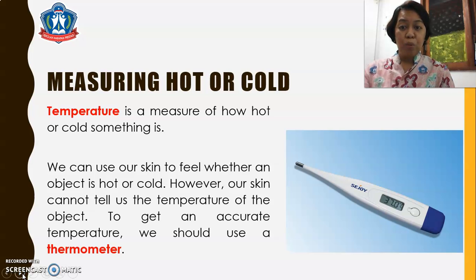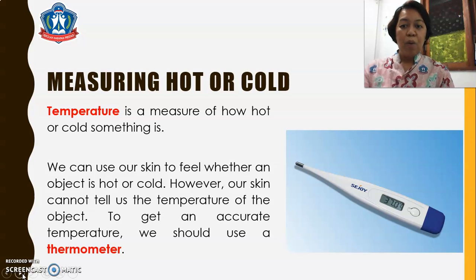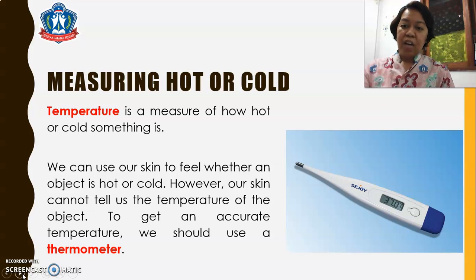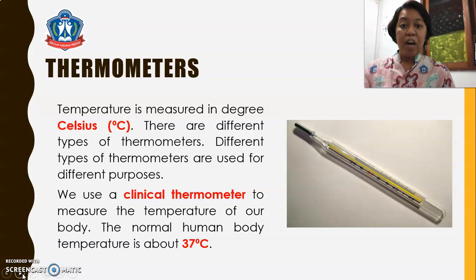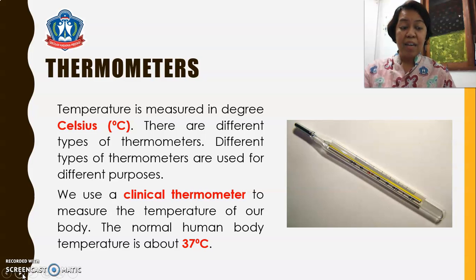Measuring hot or cold. Temperature is a measure of how hot or cold something is. We can use our skin to feel whether an object is hot or cold. However, our skin cannot tell us the temperature of the object. To get an accurate temperature, we should use a thermometer. Temperature is measured in degrees Celsius. There are different types of thermometers used for different purposes. We use a clinical thermometer to measure the temperature of our body. The normal human body temperature is about 37 degrees Celsius.